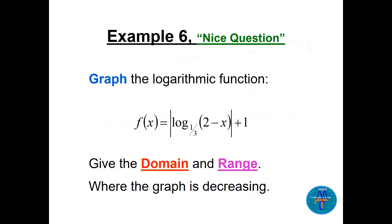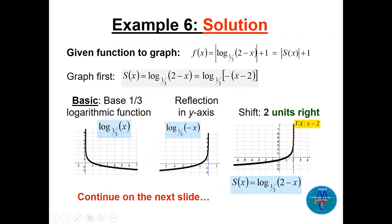Now a more complex example: f(x) = |log base (1/3) of (2 − x)| + 1. From lectures 2 and 3, when you have absolute value on the whole function, first graph the inside function, take the absolute value to make everything positive, then shift up 1 unit at the end. Let's call the inside function s(x) = log base (1/3) of (2 − x). We can rewrite 2 − x as −(x − 2) to identify the transformations clearly.